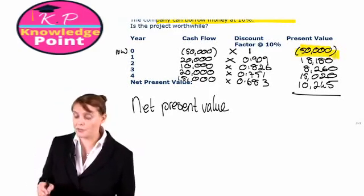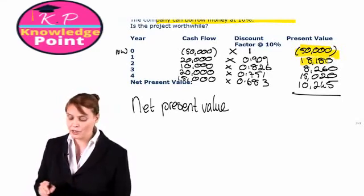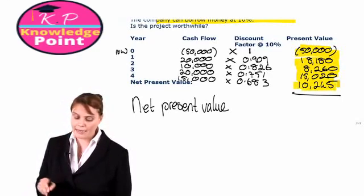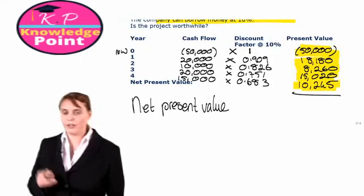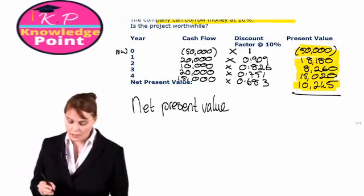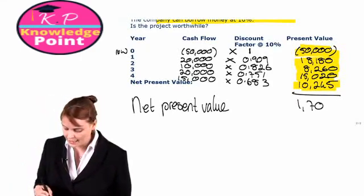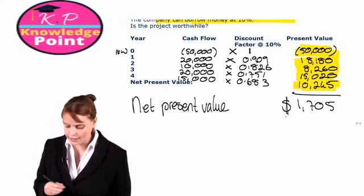So we have minus $50,000 to begin with, plus the net present value of each of our future cash inflows, and you should get $1,705.